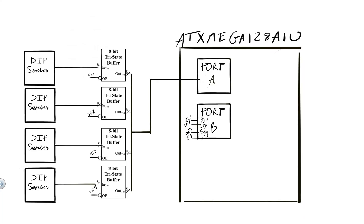For example, to read from the eight switches in the last DIP switch package, I first disable the first three tri-state buffer components by writing a high voltage to their respective OE signals — that means writing a high voltage from Port B pin 0, pin 1, and pin 2. I can do that by writing a one to the respective bits in PORTB_OUT or writing to those bits in PORTB_OUTSET. Then I enable the last tri-state buffer by writing a low voltage to Port B pin 3 — writing a zero to the bit in the OUT register, or a one to the corresponding bit in PORTB_OUTCLR.